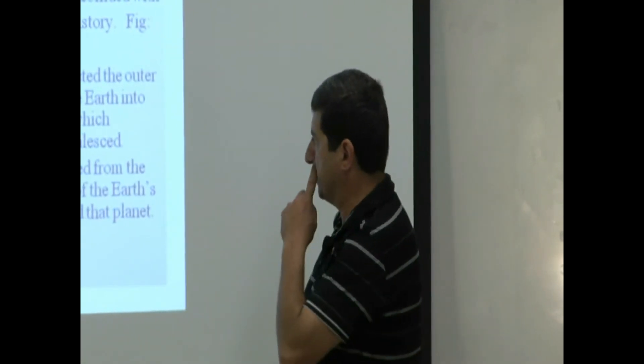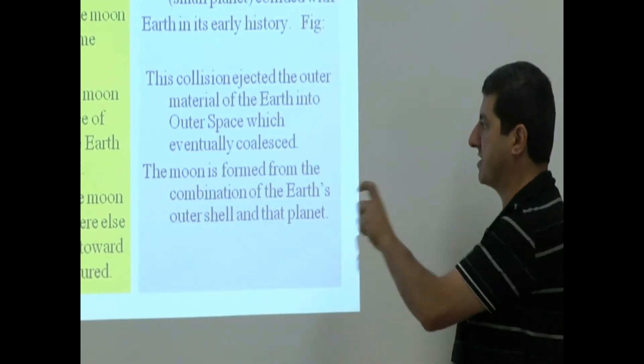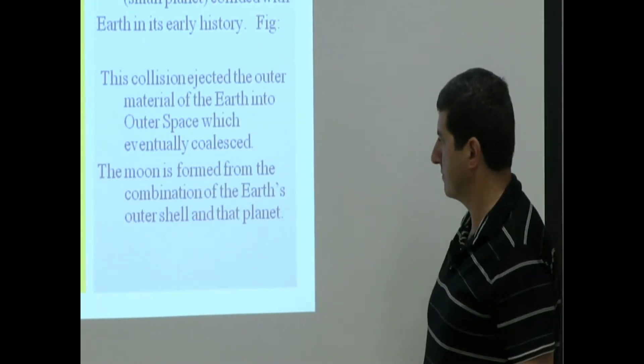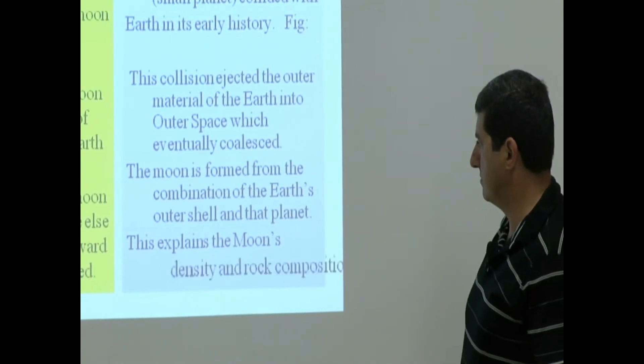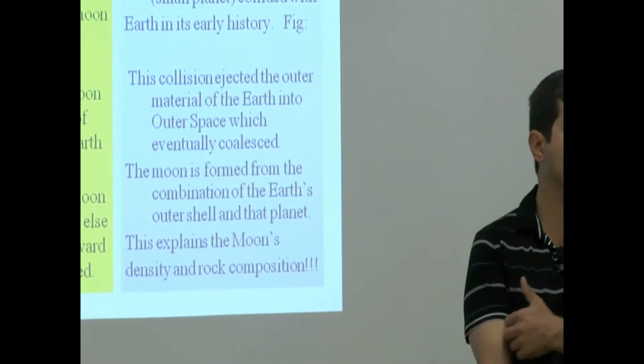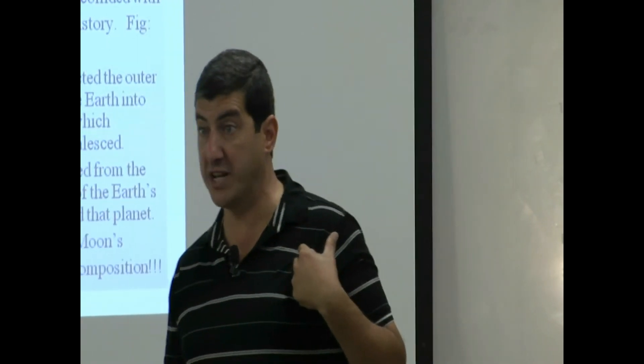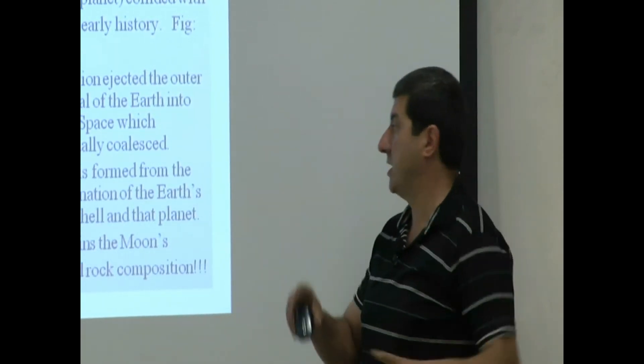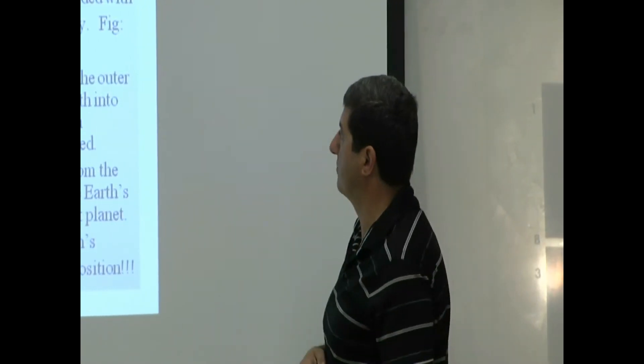This collision ejected the outer material of the Earth into outer space, which eventually coalesced. The moon is formed from the combination of the Earth's outer shell and that planetesimal. This theory explains the moon's density and also rock composition. Remember, we were saying that the moon's density is similar to Earth's crust? So it explains because the moon's crust came out and it together combined with that other planet to form the moon.